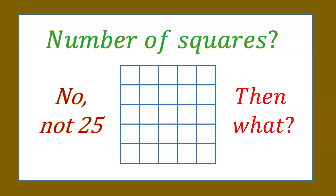Hello students. In this question there is a grid of 5 by 5 and we have to count the number of squares in this grid. There is a grid of squares of 1 by 1 each. We have to count how many squares are there, and as I have written in the caption, it is not 25. Then how many squares are there and why is it not 25? I am saying that there are not just 25 squares.